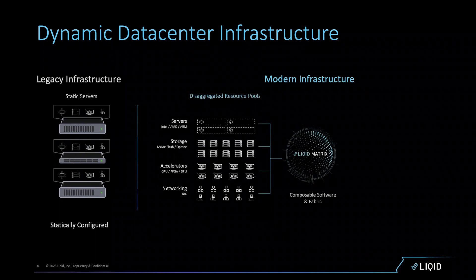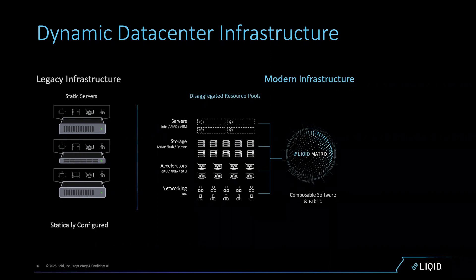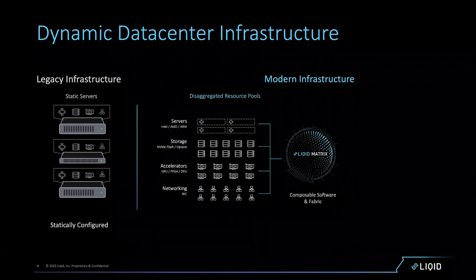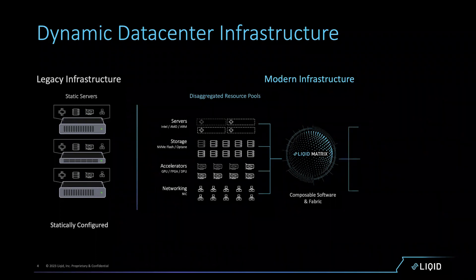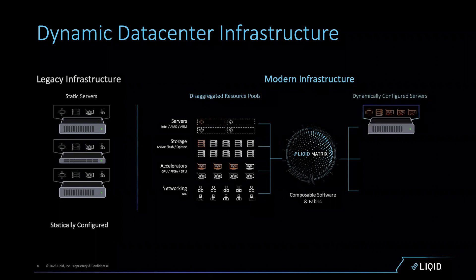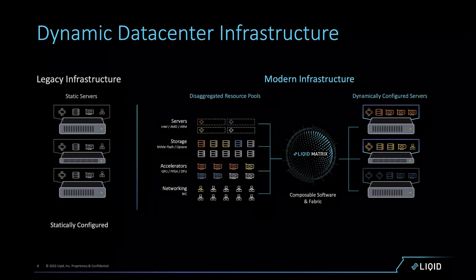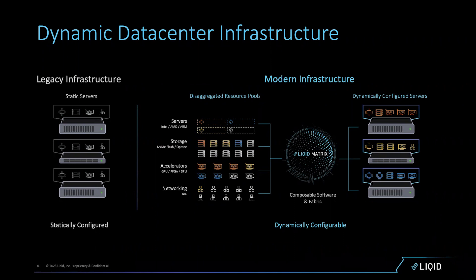In a disaggregated architecture, we take a different approach. Think about pools of resources — pools of compute, pools of storage, pools of accelerators. Instead of plugging devices directly into a motherboard, we plug them into a switch. Software then dynamically configures at the bare metal what we want our machine to look like: attach four storage devices, attach 12 of those GPUs. The server thinks these are bare metal devices, but as the workload changes, we can evolve the infrastructure to best match it.